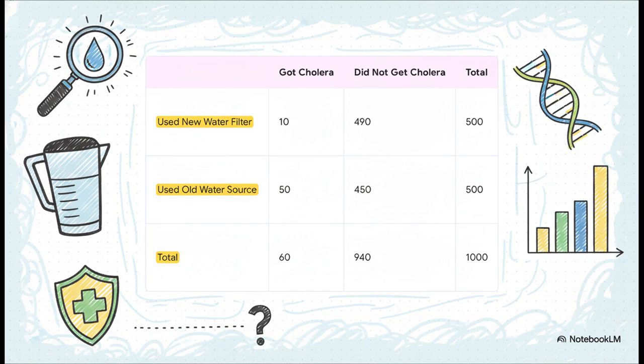Let's break it down. We've got our data from 1,000 people. Look here. 500 people used the new filter, and only 10 of them got sick. Now, check this out. Of the 500 who used the old water, 50 got sick. Whoa. Just by looking at these raw numbers, your detective senses should be tingling. We've definitely got a strong link here, a really clear association.